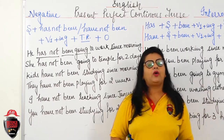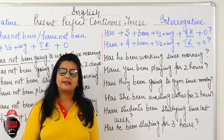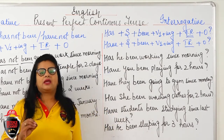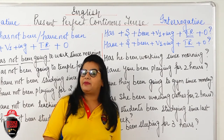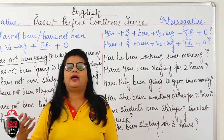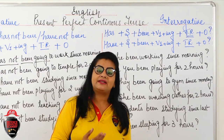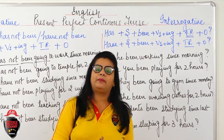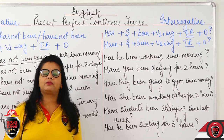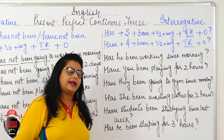Now we come to interrogative sentences in Present Perfect Continuous Tense. Interrogative means questions. In every question, the helping verb comes first and the question mark comes at the end. The helping verb depends on the tense. In Present Perfect Continuous Tense, the helping verb is 'has been' or 'have been.' In questions, only 'has' comes first — not 'has been' together. Then subject, then 'been,' then V1 ING. Remember: been and V1 ING always stay together and cannot be separated.